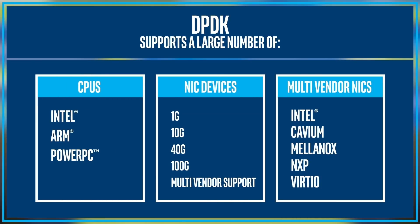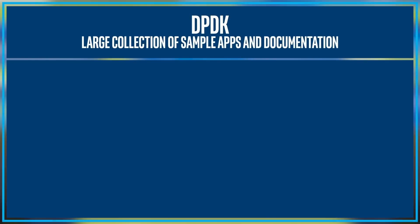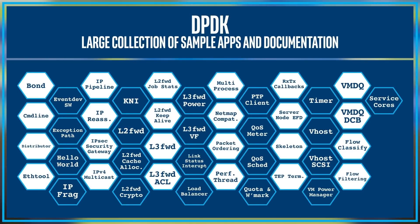The multi-vendor NIC support includes Intel, Cavium, Mellanox, NXP, and Word.IO. DPDK also supports crypto devices in a look-aside design plus compression. To make it easier for developers, DPDK comes with a large collection of sample apps and documentation. Now, let's cover some DPDK 1805 features.